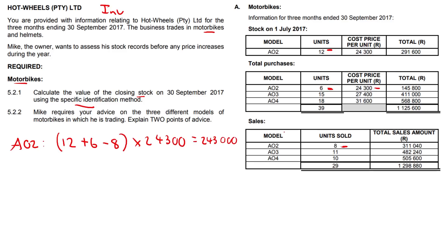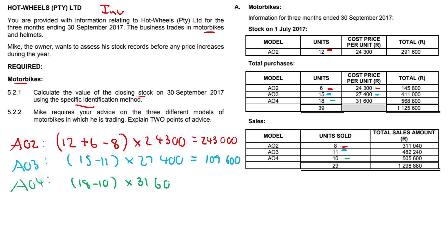For model A03, we have 15 minus 11 units remaining, with a unit price of 27,500. So 15 minus 11 equals 4, times 27,400 equals a total of 109,600. For A04, we have 18 minus 10 units, times 31,600 unit price, which gives a total of 252,800.